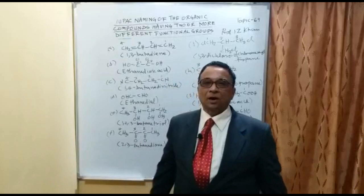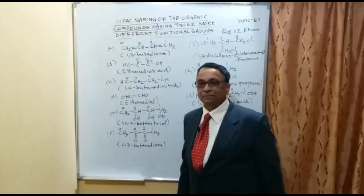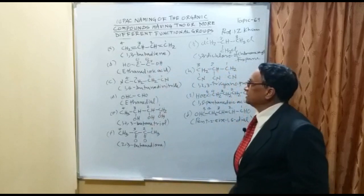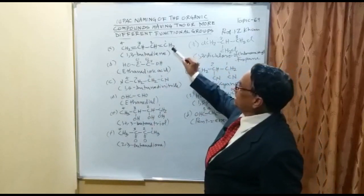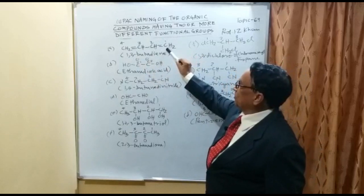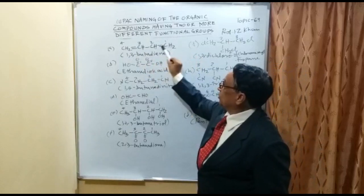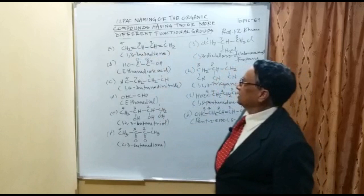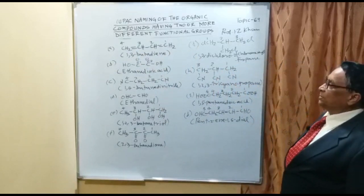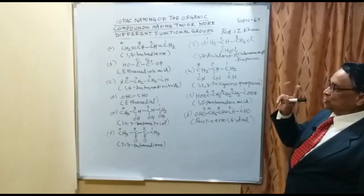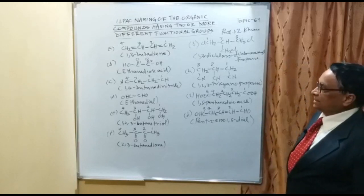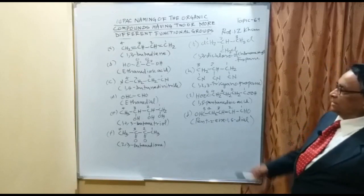Continuing with examples: in example A, the numbering is carbon 1, 2, 3, 4. At carbon 1 and carbon 3 a double bond is present and there are 4 carbon atoms. The name of this compound is 1,3-butadiene. In example B, the compound is ethane dioic acid — ethane means 2 carbons, and dioic means two carbonyl acid groups.